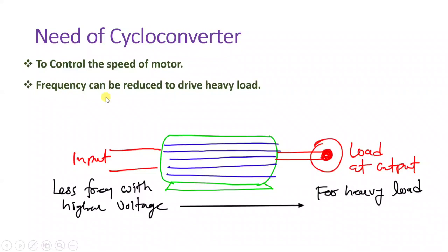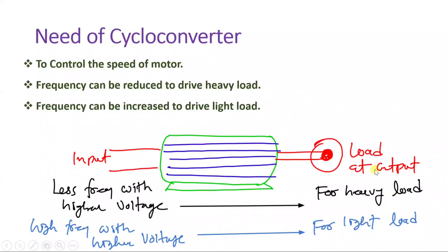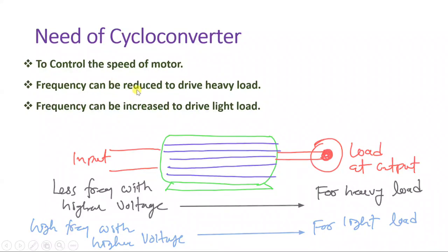Sometimes we need to reduce frequency, and that can be done using a cycloconverter. In some applications, we need to increase frequency to drive a light load — if you have a light load and want to handle it fast, we can increase frequency using a cycloconverter. So we handle light load by increasing frequency and heavy load by decreasing frequency.